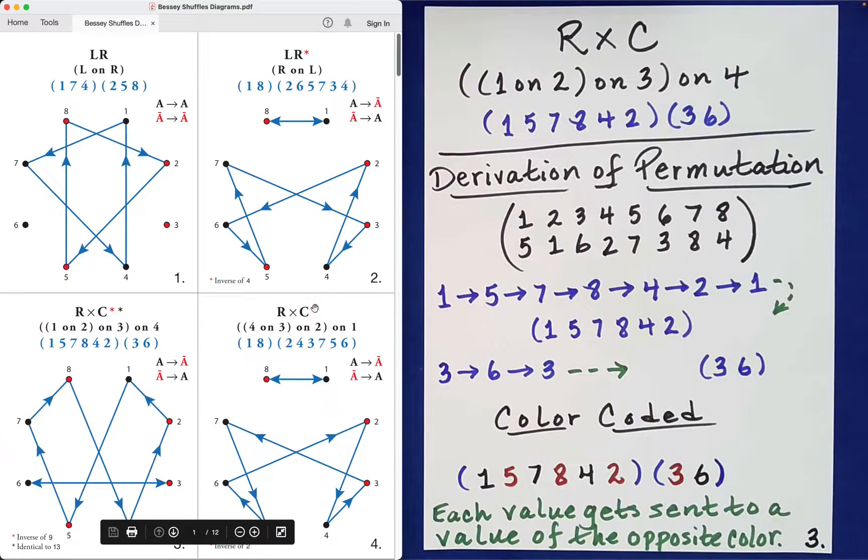Now I thought we would finish with this one over here, partly because it's a special one. This shuffle here is the inverse of this one, isn't that curious? Well what does it mean to be the inverse? It means that if you perform this shuffle and then perform this shuffle, you get back to the original order one through eight.